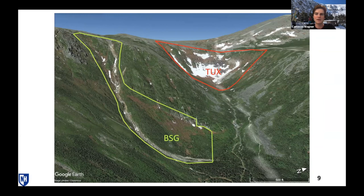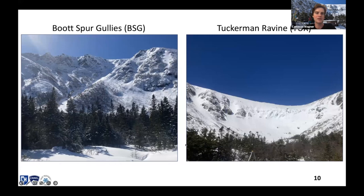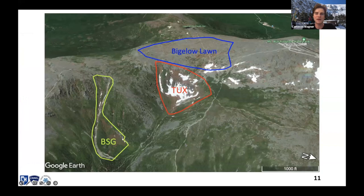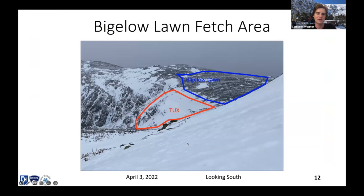Here are wintertime pictures: BSG on the left and Tuckerman's on the right — a very well-known glacial cirque. A lot of people come out there in the spring because quite a bit of snow ends up there from avalanche debris and wind transport. The reason Tuckerman Ravine gets so much accumulation is Bigelow Lawn — a really large, almost entirely flat fetch area situated directly due west of the ravine. Wind comes straight in and blows all the snow that would normally land on Bigelow Lawn down into Tuck's. In this April 3rd image, you can see there's almost no snow on the Bigelow Lawn area.